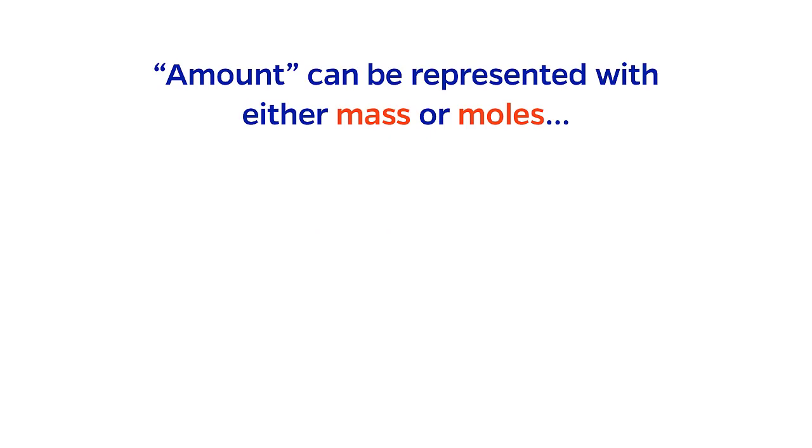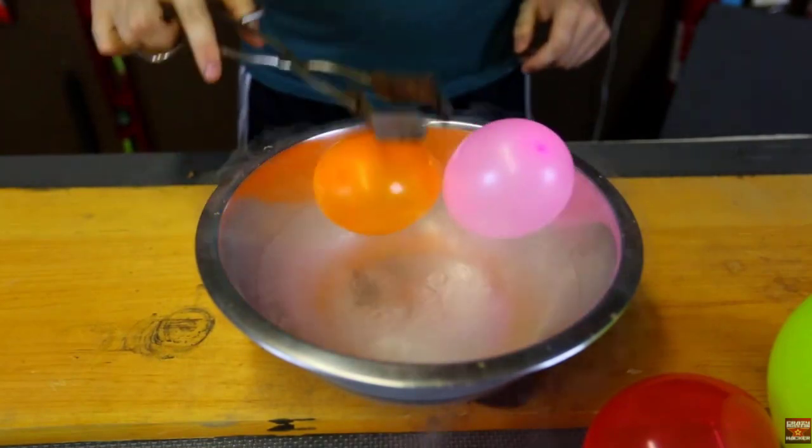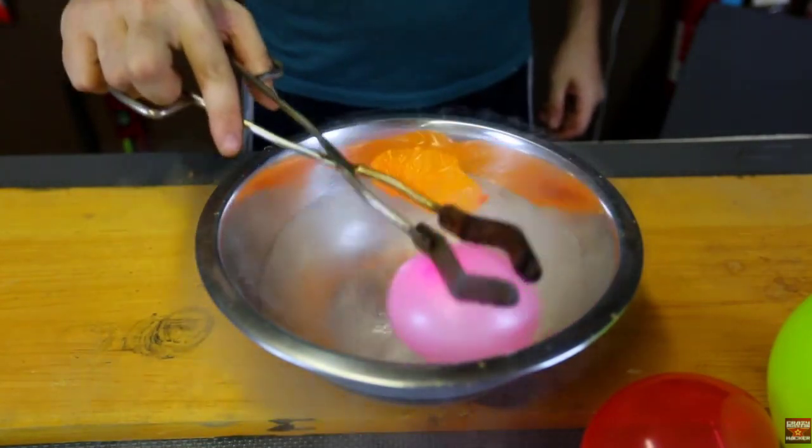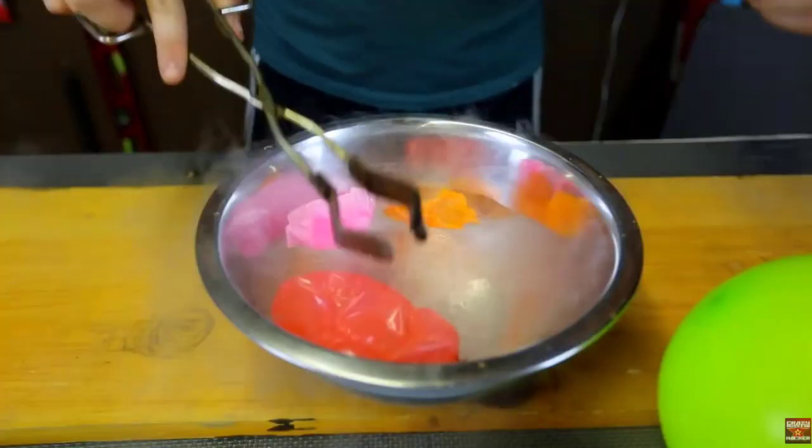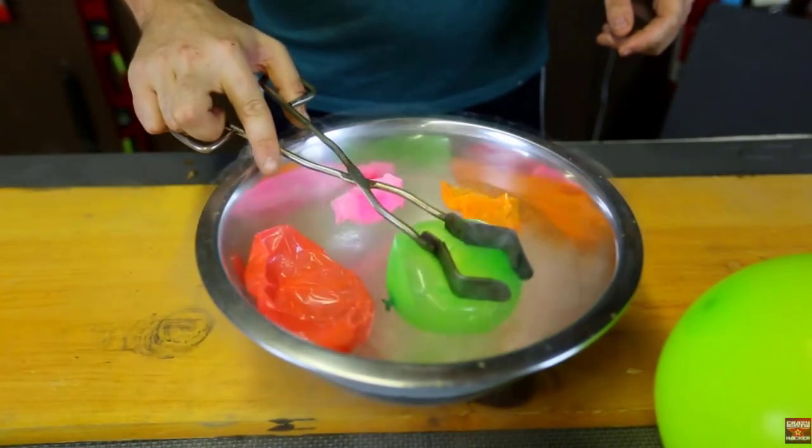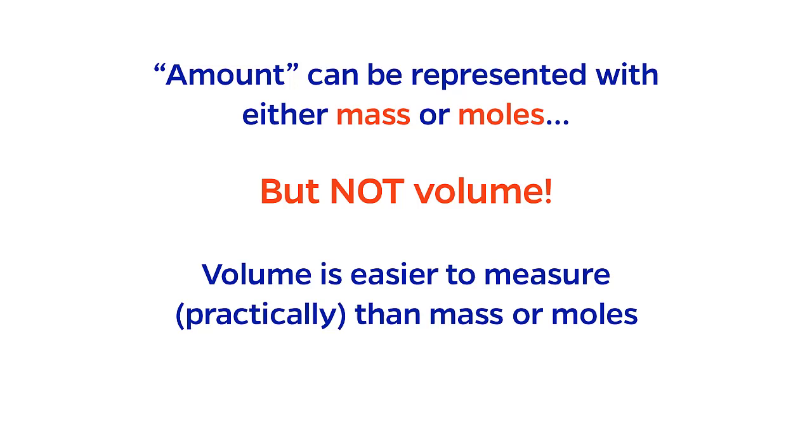A quantity that we cannot use to represent amount is volume. This is because volume is fickle. It does not necessarily obey the general balance equation. For example, a gas will occupy less volume if you simply cool it or pressurize it. And neither of these are terms that are in the general balance equation. I mention this because of the quantities mass, moles, and volume, volume is the easiest to practically measure.